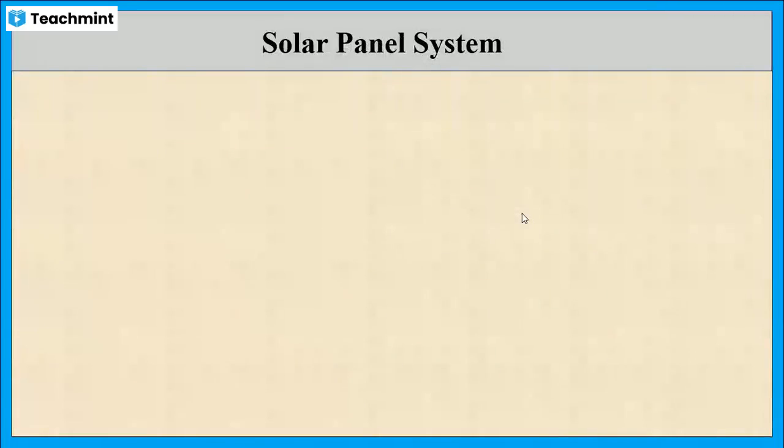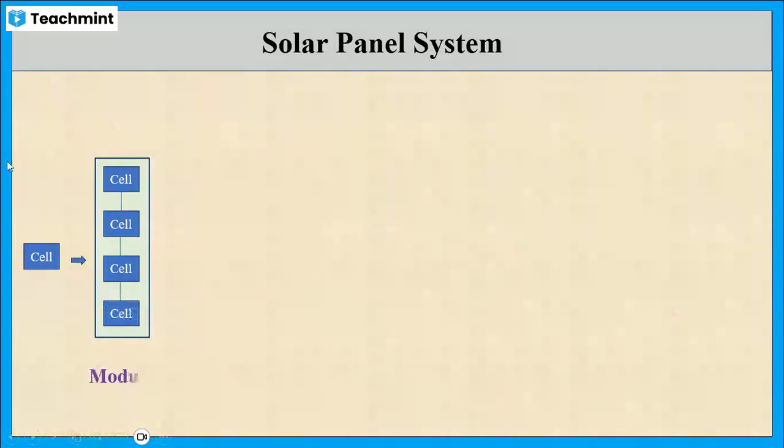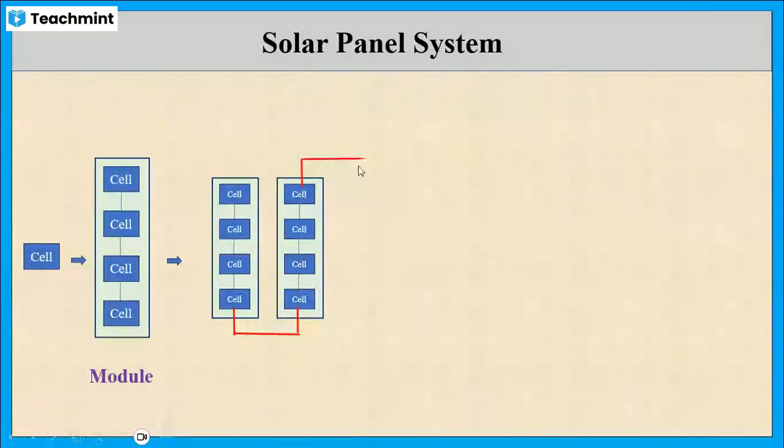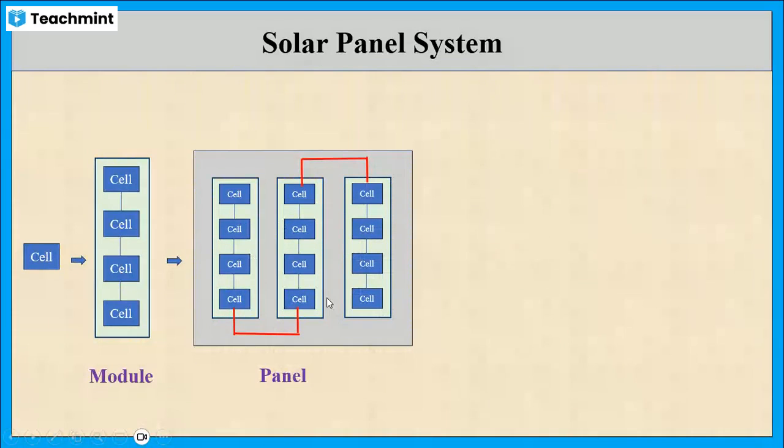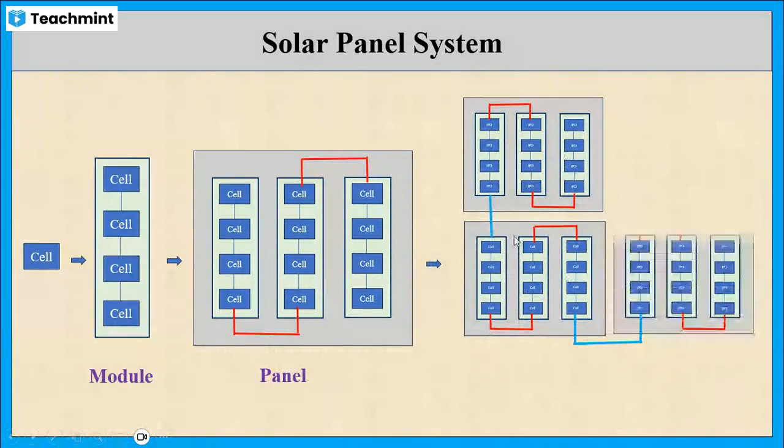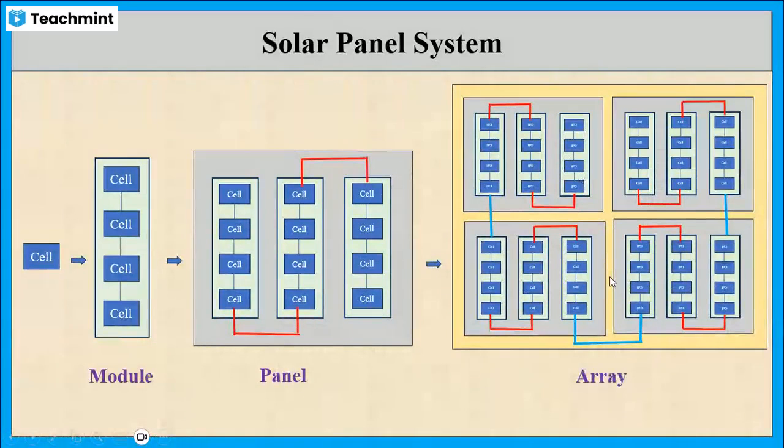Now let us see the solar panel system. The individual photovoltaic device is known as a solar cell. Due to its small size, it can produce only one to two watts of electricity. The power output can be increased by connecting the cells which is known as a module. Further, if these modules are connected together, it is known as solar panels. If a number of panels are connected together, it will produce a photovoltaic array, which is the complete power generating unit.